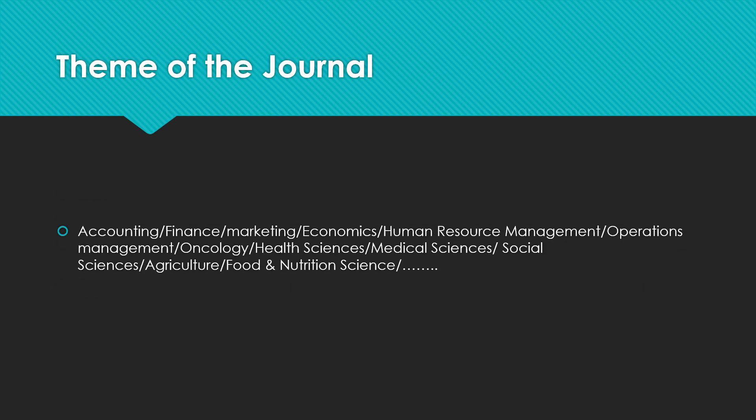The second point which we need to consider is the theme of the journal. Since we are doing research in a particular domain, we have to select the journal accordingly — the theme of our paper should match the theme of the journal. The theme can be accounting, finance, marketing, economics, human resource management, operation management, oncology, health sciences, medical sciences, social sciences, agriculture, food and nutrition, or any other field.